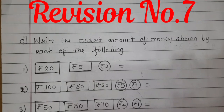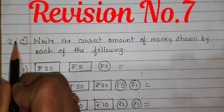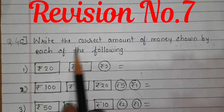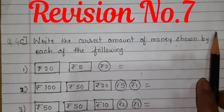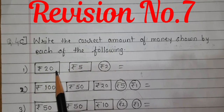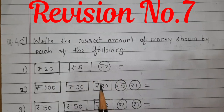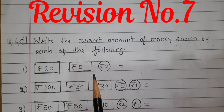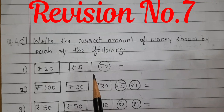Hi kids, welcome back in our second single math session. Today we are going to see revision number 7, question number 4C. Write the correct amount of money shown by each of the following. Students, different notes and coins are given. We have to count and write. For that you need a separate paper to do the rough work.